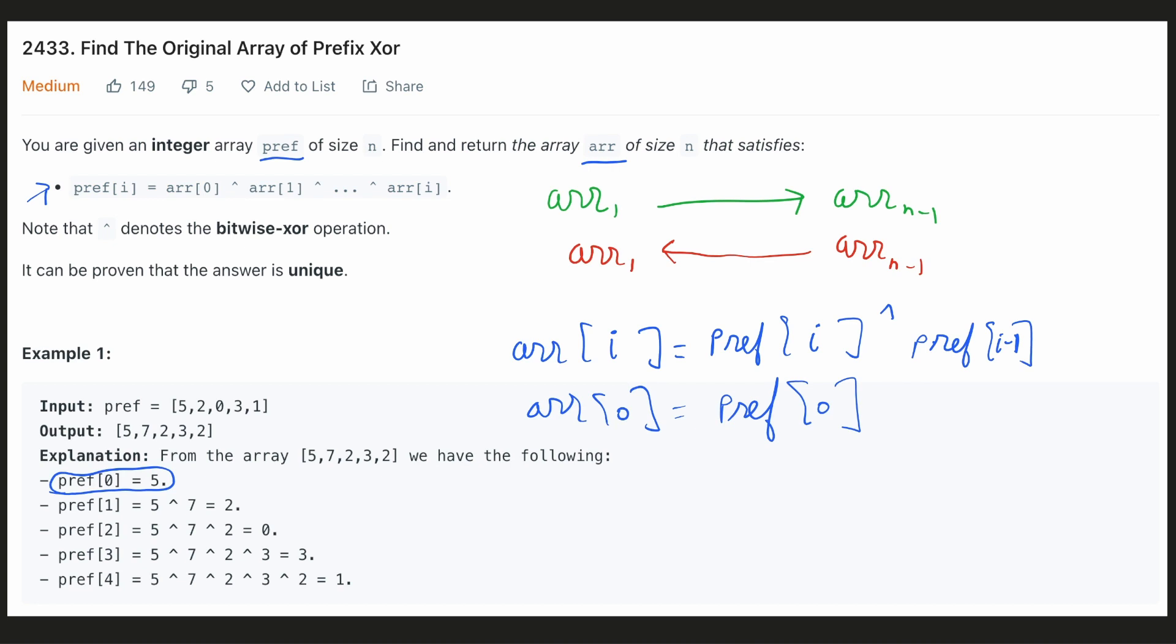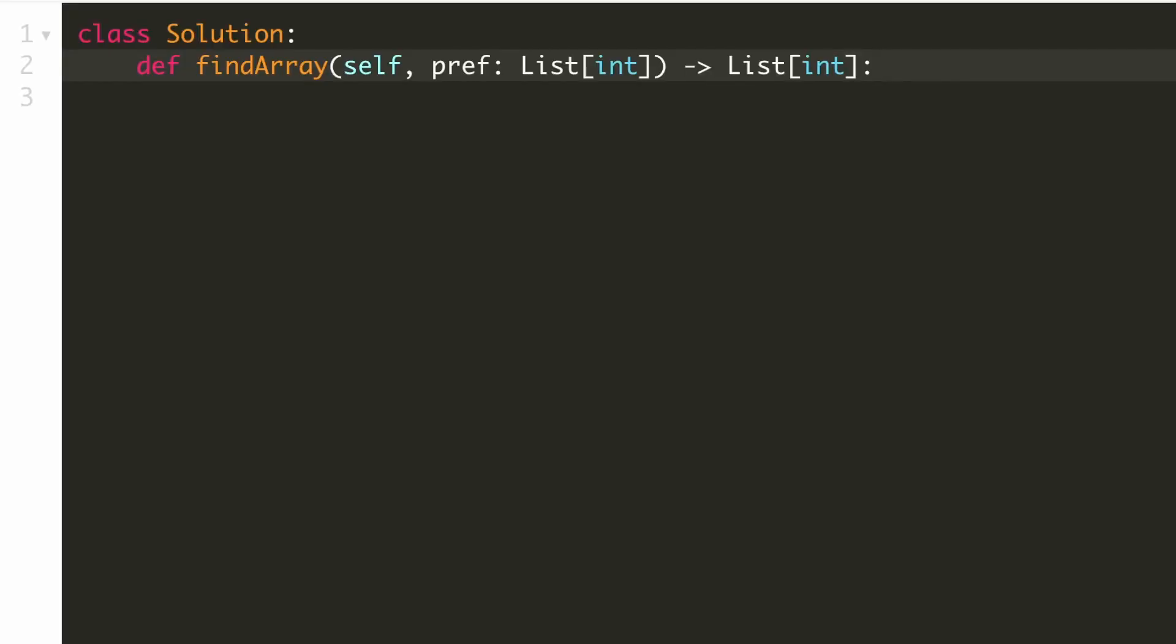Now let's implement our solution. Now let's write a loop from the last index till the first index. This would be a reverse loop and it would skip the zeroth index. Now let's modify our array in place.